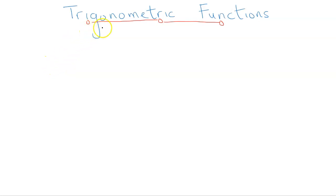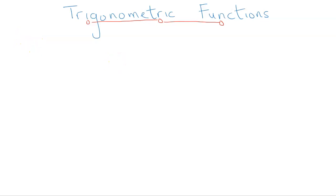Hello everyone. In this video we are going to be discussing trigonometric functions. The short form of trigonometry is trig. There are three basic ones. The first is the sine, the second is cosine, and the third is the tangent.